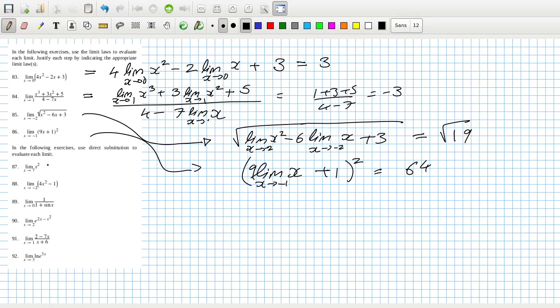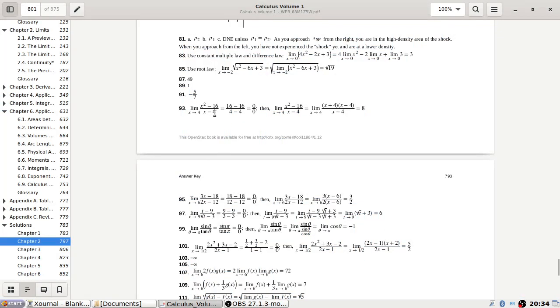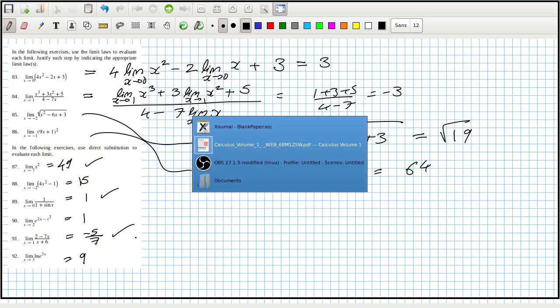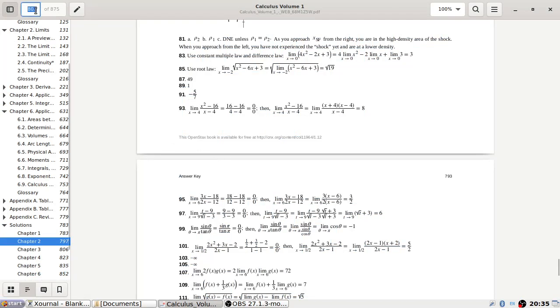Now I can use direct substitution. So that's 49, replace the x with 7. That's 15, because it's 16 minus 1. That's 1. That's e to the power 0, so that's 1. That's 2 minus 7, which is minus 5 over 7. And log of 9, log e 9. Let's check if that's right. 49, 1, minus 5 over 7, okay.